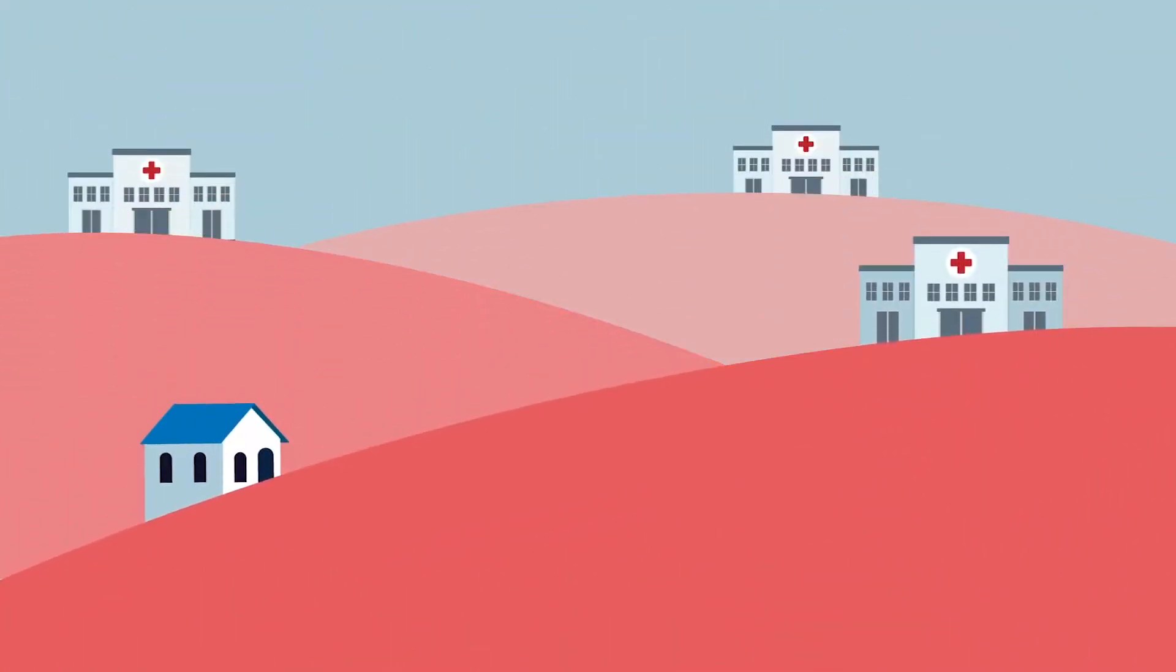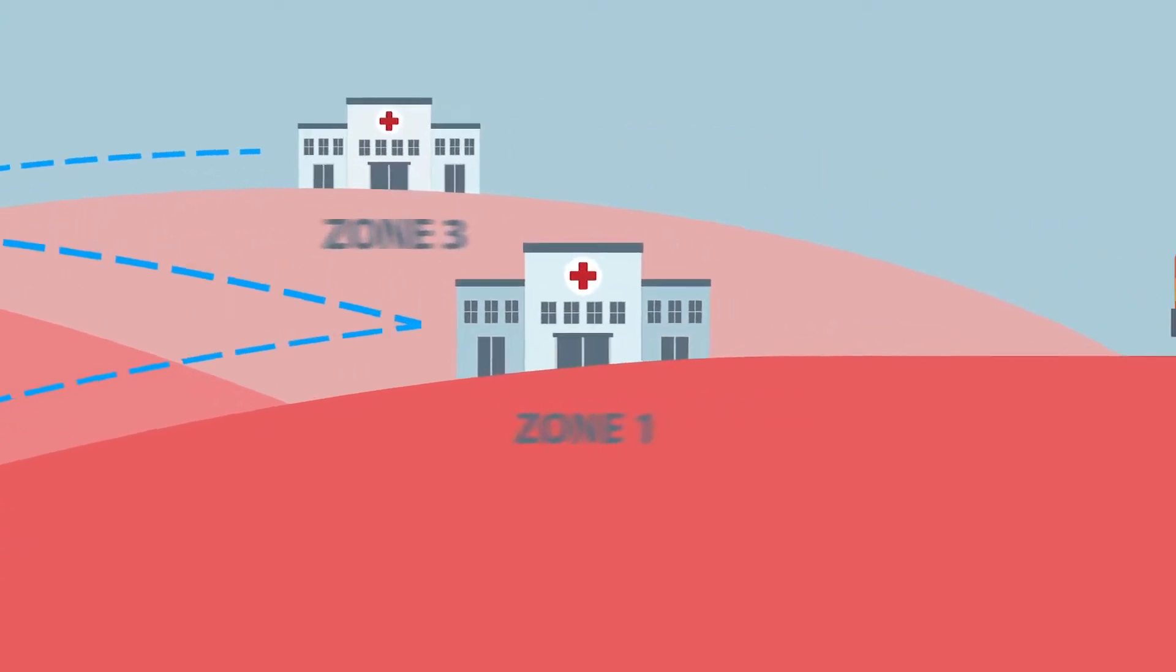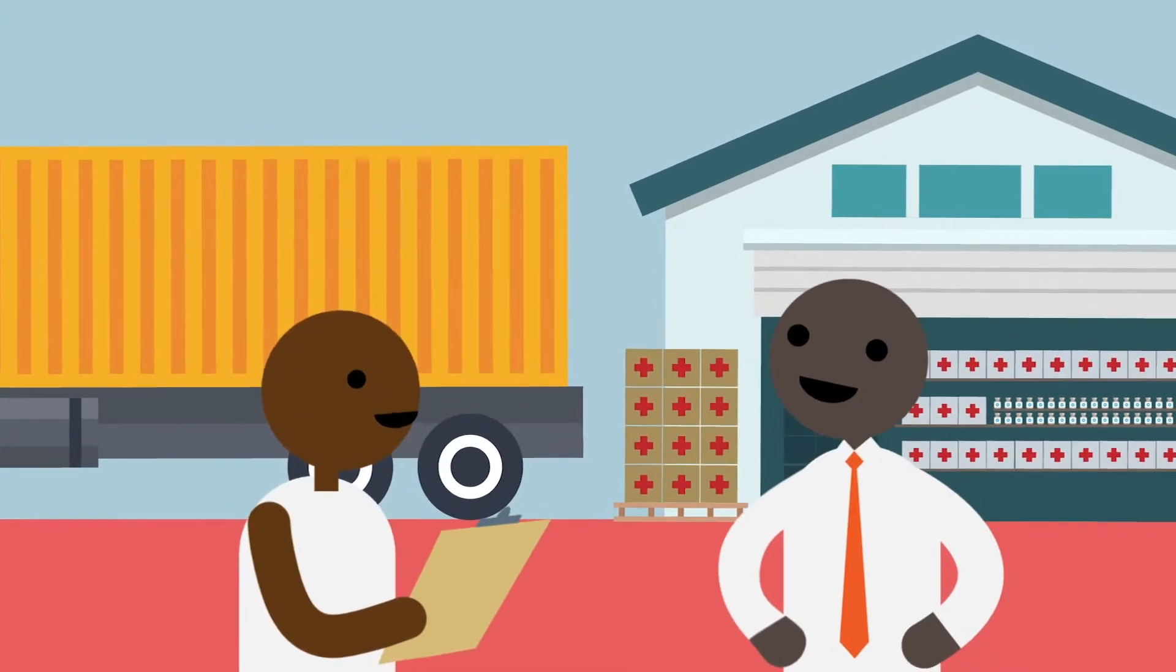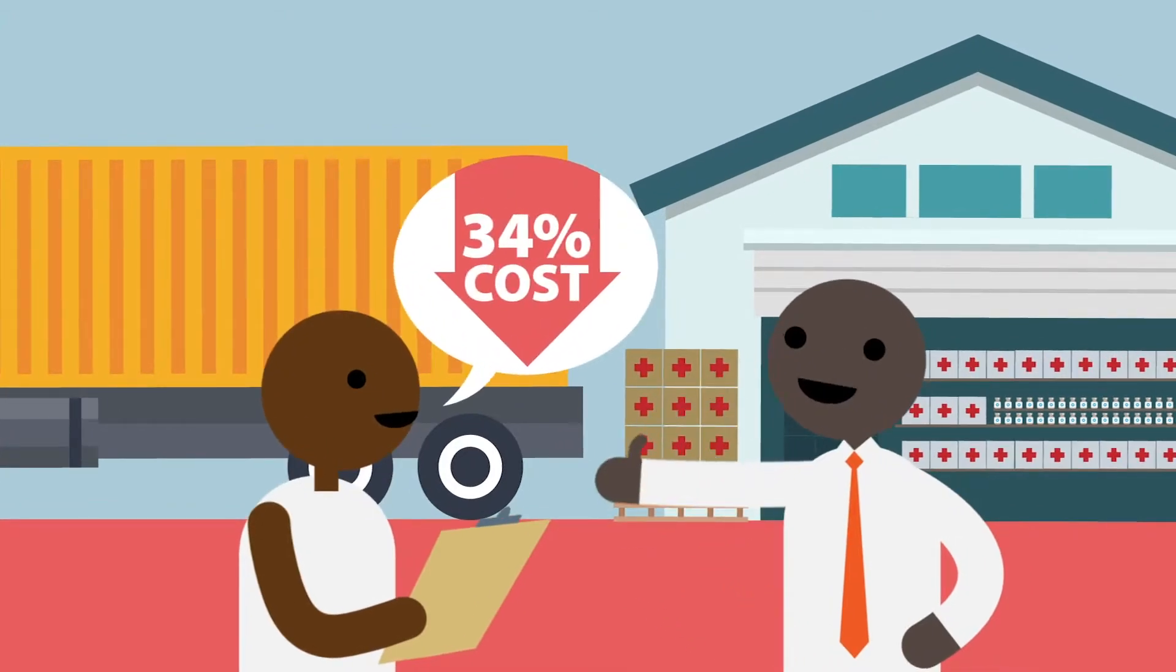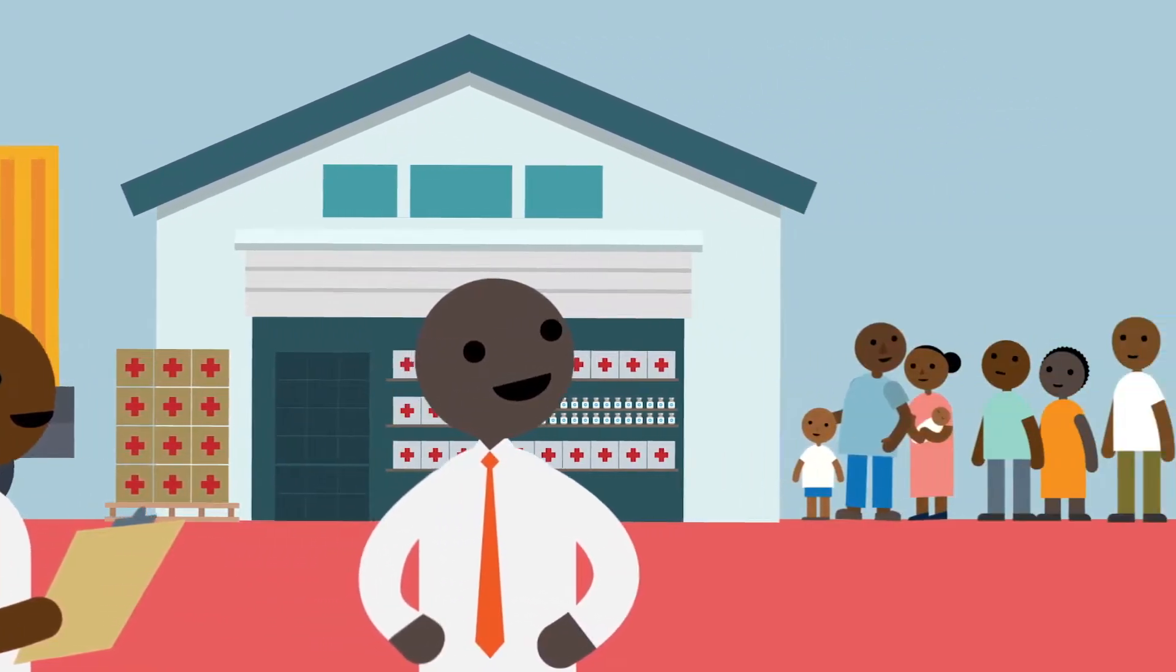In DRC, VillageReach is working with the Ministry of Health in three zones. Instead of health workers collecting vaccines, provincial immunization authorities took on this role, leading to improvements in the availability of health products, the cost effectiveness of the supply chain, and more people receiving vaccinations.